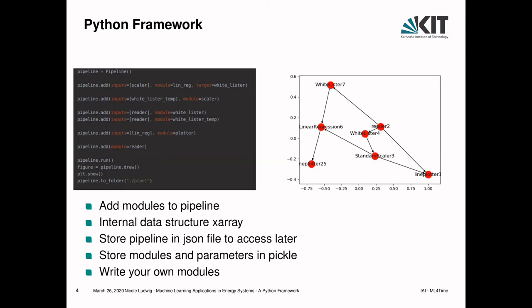Each of these modules gets added to a pipeline. In the background, we set up a graph that goes through your pipeline and connects everything you want to do. For example, you read in some data, decide which variables to use — one variable goes directly into a linear regression, while another is first scaled and then goes into the linear regression model. Either all intermediate steps are plotted or just the final results. With these modules and this pipeline, you can easily store the pipeline in a JSON file and access it later, making it easier to reproduce results and redo previous analyses.